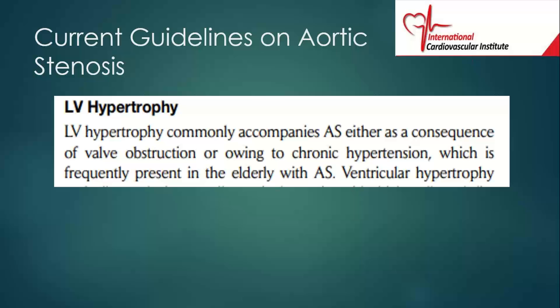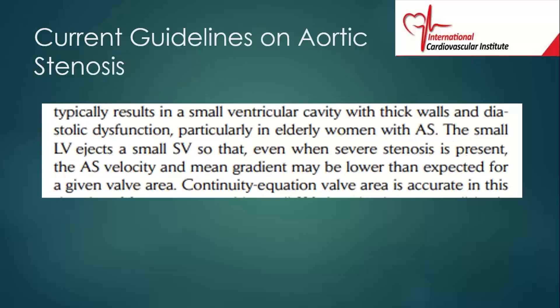LV hypertrophy — thickening of the heart muscle — commonly occurs in aortic stenosis. If you have an obstruction and the heart has to work hard, the muscle thickens. But many of these patients with aortic stenosis also have chronic hypertension, and as a result the myocardium thickens. So it could be secondary to aortic stenosis or underlying hypertension.